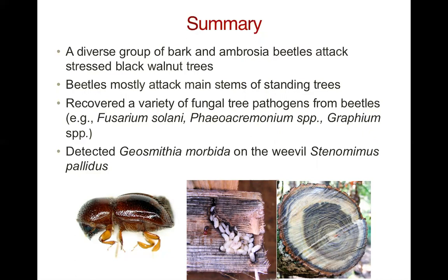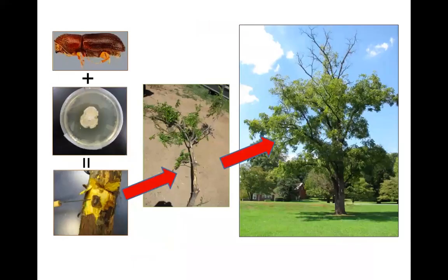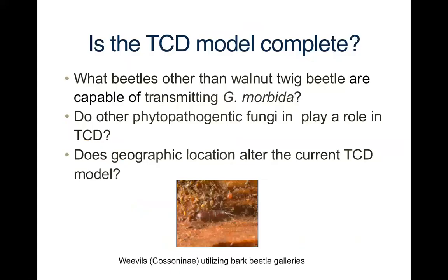This is the first time the pathogen had been found on a beetle other than the walnut twig beetle, and so there's reason for concern about the extent to which other beetles might be interacting with Geosmithia morbida on TCD symptomatic trees. Our model has been that the walnut twig beetle vectors Geosmithia morbida, it causes cankers on the branches of those trees, those cankers coalesce and kill the tree. But because of the finding of Geosmithia morbida on Stenomimus, it makes us wonder the extent to which our TCD model is accurate or complete.